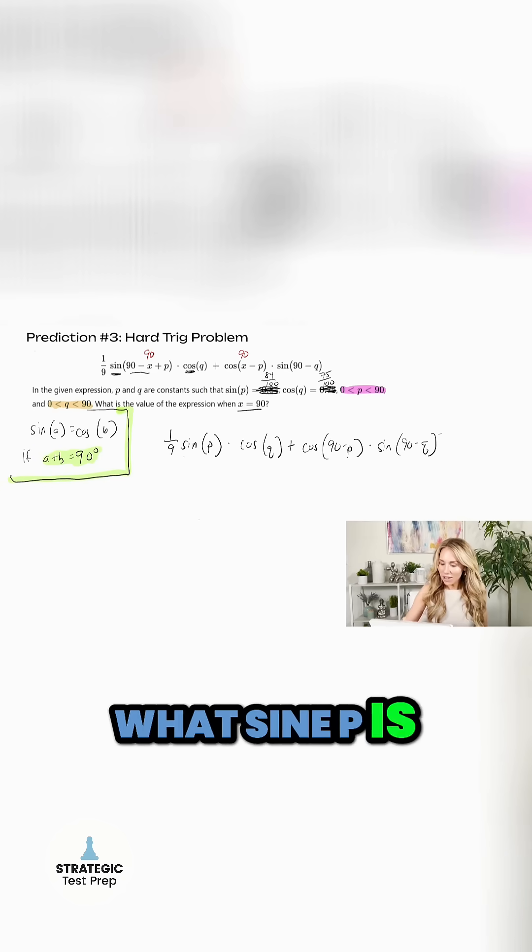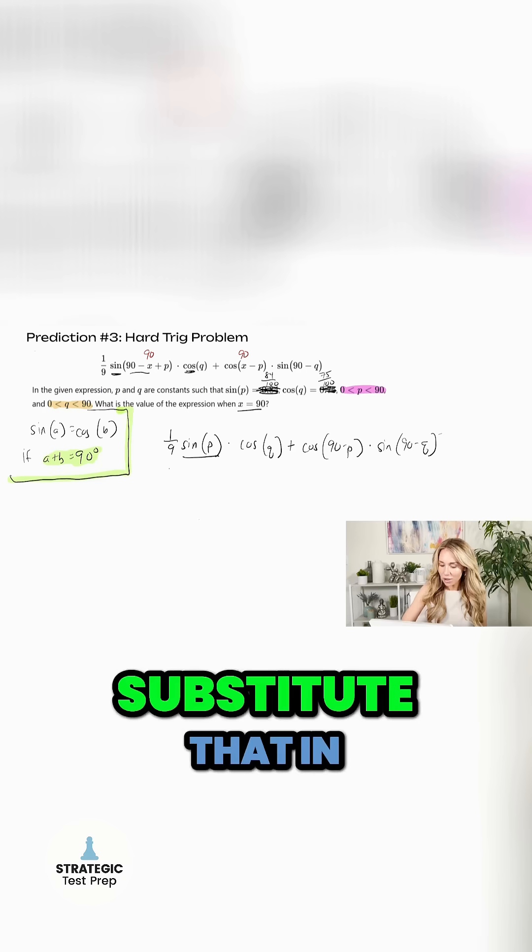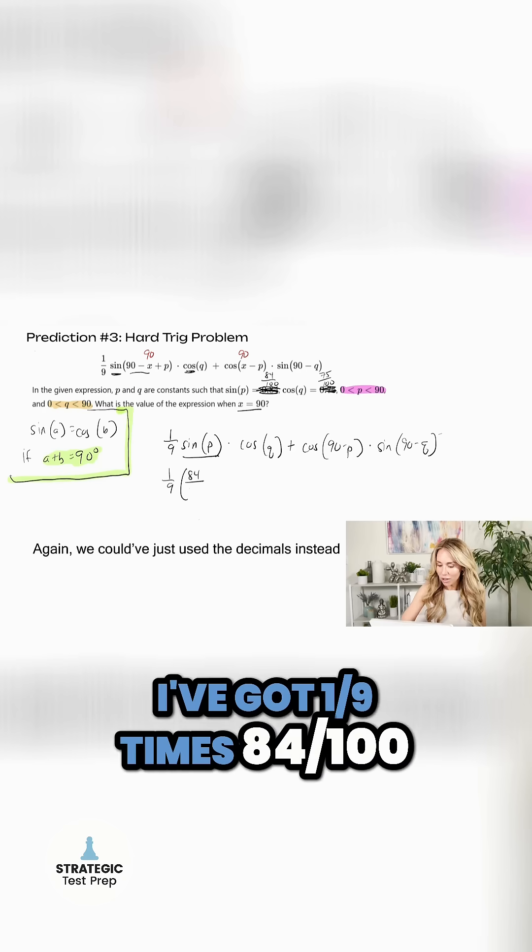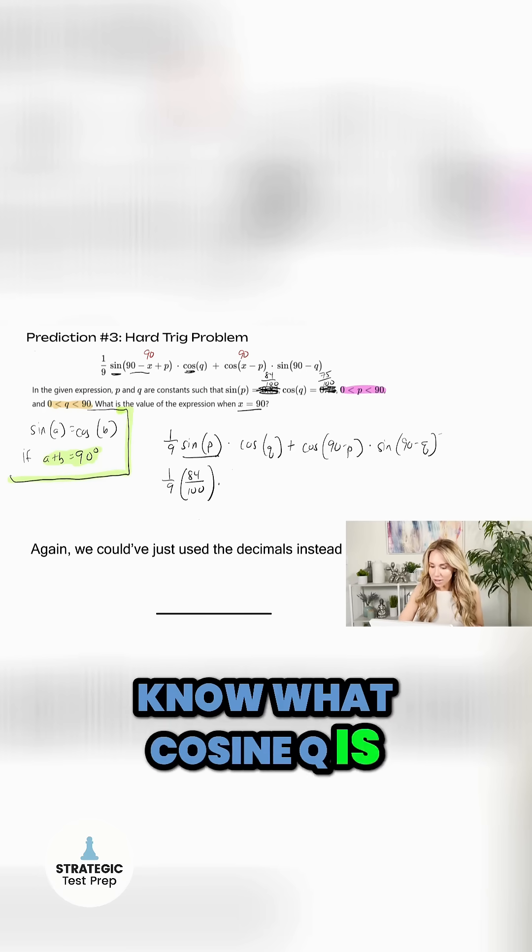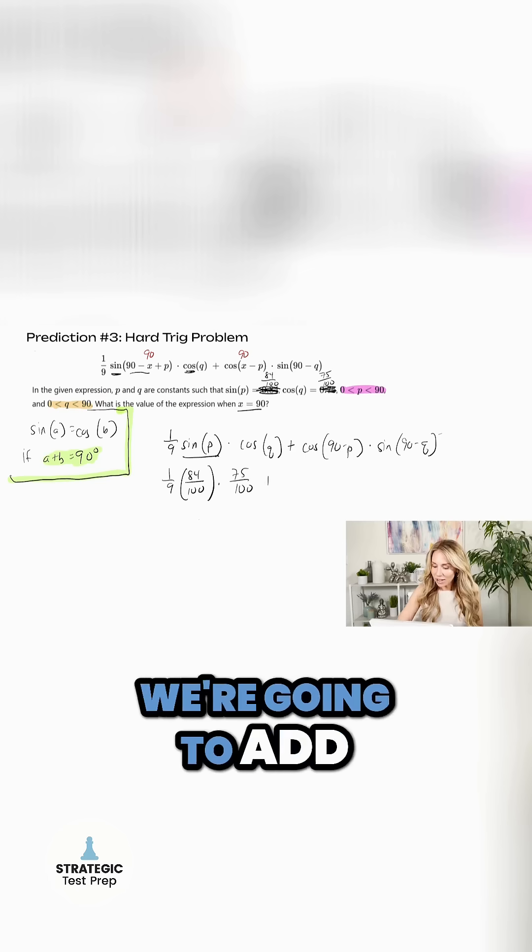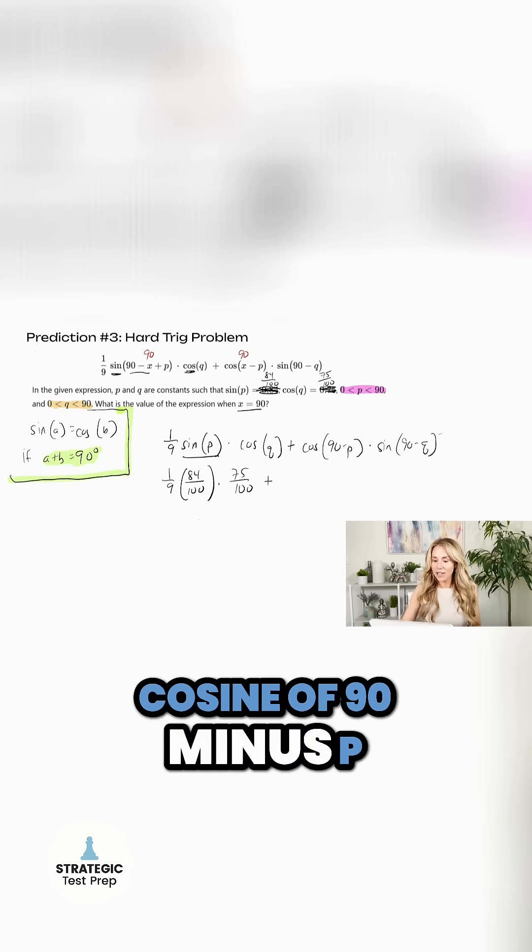So we already know what sine P is. It's 84 over 100. So I'm going to substitute that in. I've got one ninth times 84 over 100. We know what cosine Q is. It's going to be times 75 over 100.